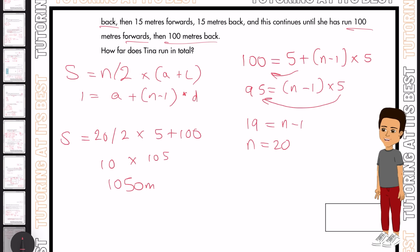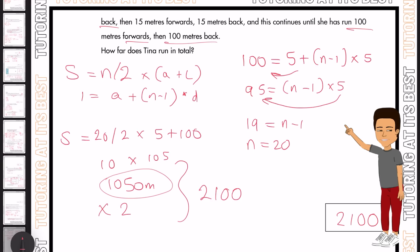But since she runs the distance forward and backward, that's twice the sum. So you take 1,050, you times it by 2, and we get 2,100 meters. And that is your answer. So Tina runs a total distance of 2,100 meters.